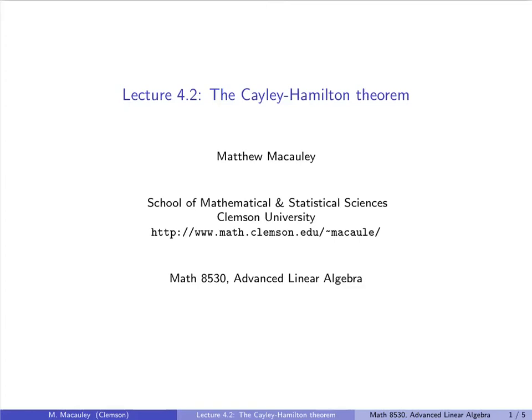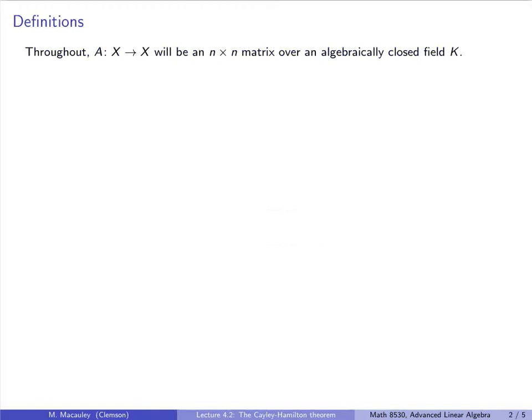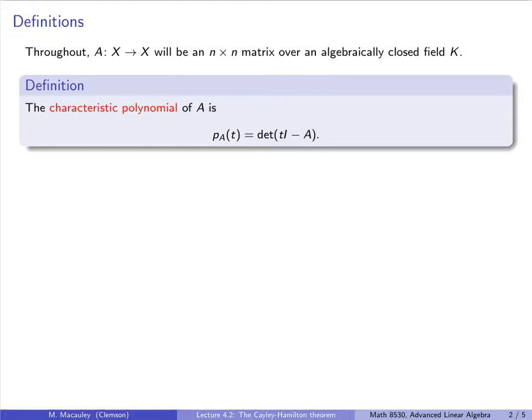Welcome to lecture 4.2, the Cayley-Hamilton Theorem. As before, we will assume that A is an n-by-n matrix over an algebraically closed field K, so it's an endomorphism of X. We will define the characteristic polynomial of A to be the determinant of TI minus A, where T is a variable, and we write that as P_A of T, or if A is understood, just P of T.